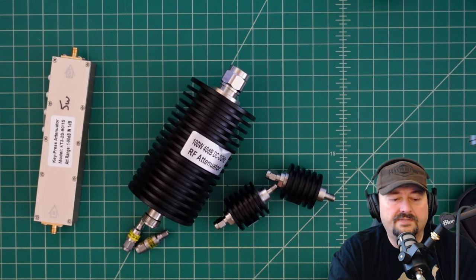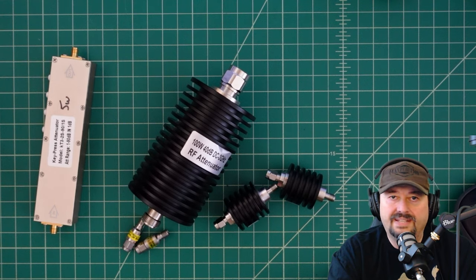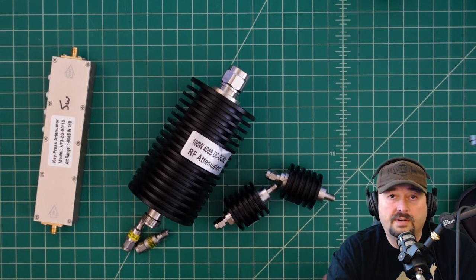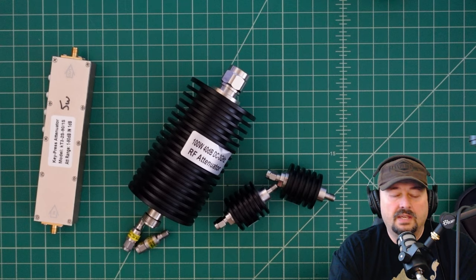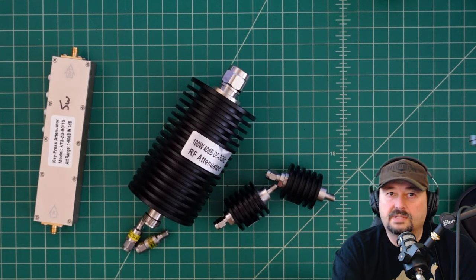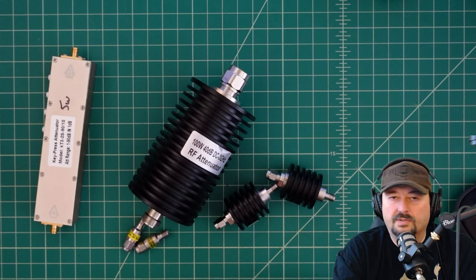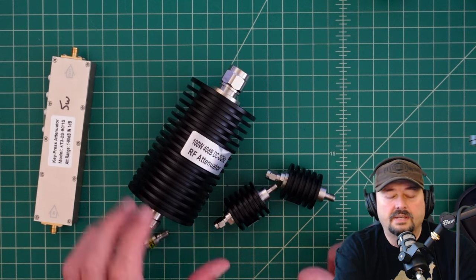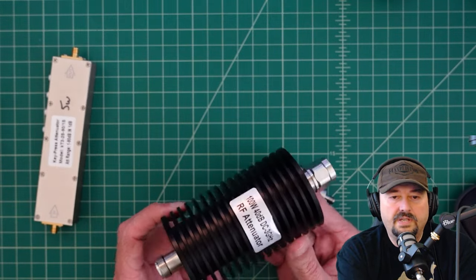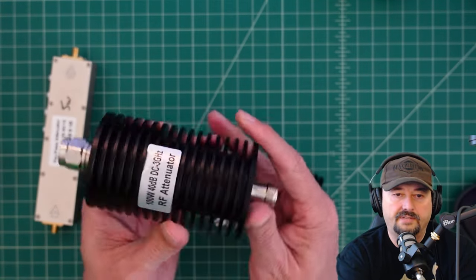Alright folks, so in today's video we're going to talk a little bit about attenuators and how you may use them when you're an amateur radio operator like myself. So what we have here is a couple of different examples of attenuators and I'm just going to pick them up and start talking about them. This is the one I call the big ass attenuator and we use attenuators like this for a couple of different things.